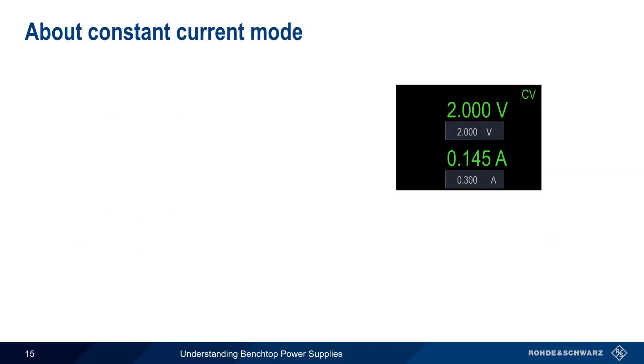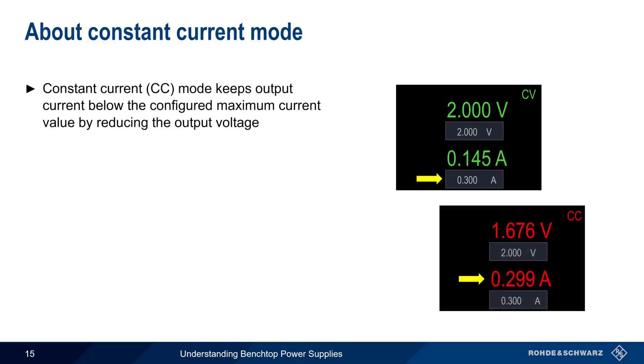Remember that as long as the current being drawn by the load is below the configured threshold, here 300 milliamps, the supply operates in constant voltage mode. As we just mentioned, constant current mode keeps the output current below the threshold or maximum value by reducing the output voltage. Here, voltage was automatically lowered to ensure that the current stays below the 300 milliamp threshold. In many cases, the power supply will produce some type of visual indication when it enters constant current mode, such as changing the display color, displaying a CC icon, illuminating an LED, etc.